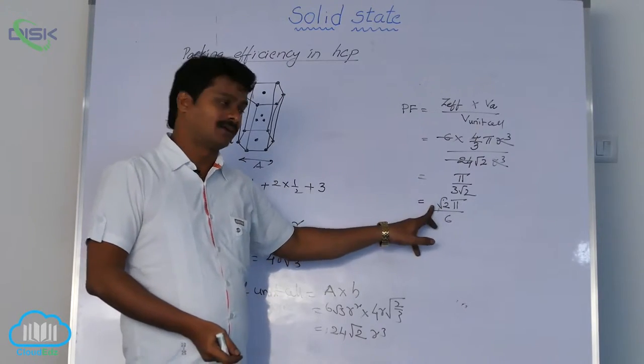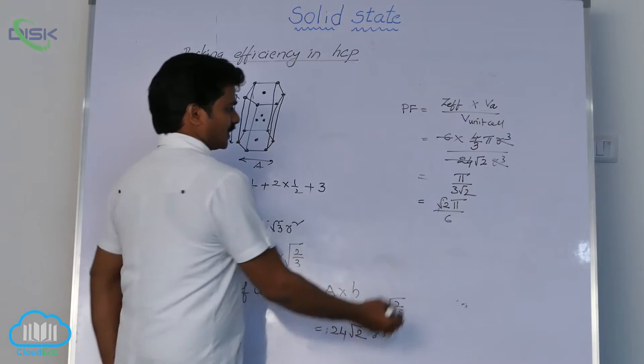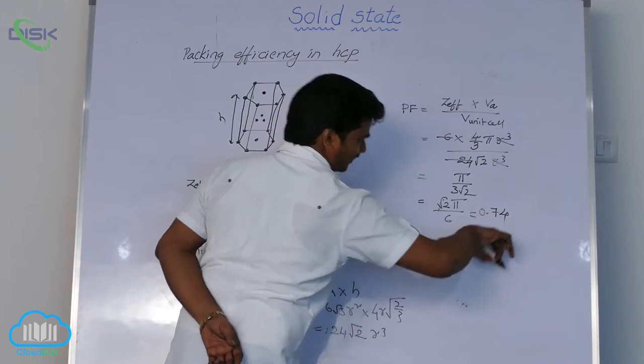But root 2 pi by 6, this formula we have in FCC also. So substituting the pi value and root 2 value, this value is 0.74.